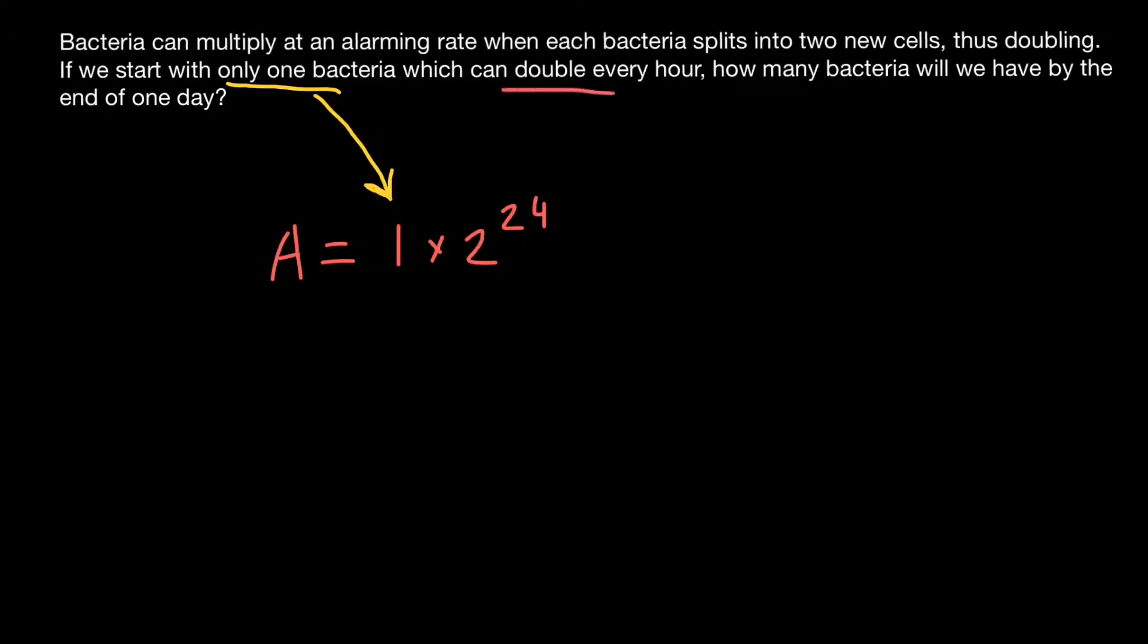So sometimes in a problem, you can find that bacteria can, for example, triple or quadruple in a certain period of time. So then we put three or four here instead of two.